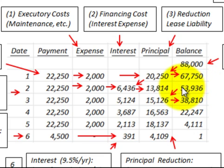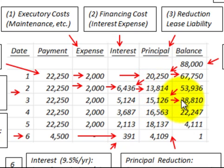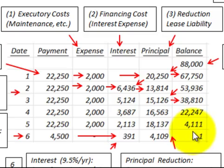Taking the year-three beginning balance of $53,936 times 9.5% gives an interest expense of $5,124. Subtracting $5,124 from $20,250 gives a principal reduction of $15,126. You continue amortizing the interest and principal each year until you reach a zero balance.